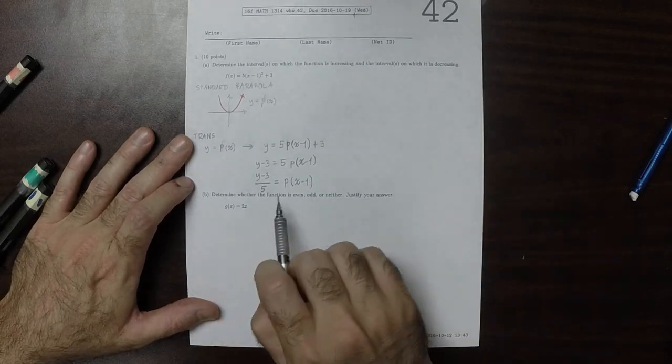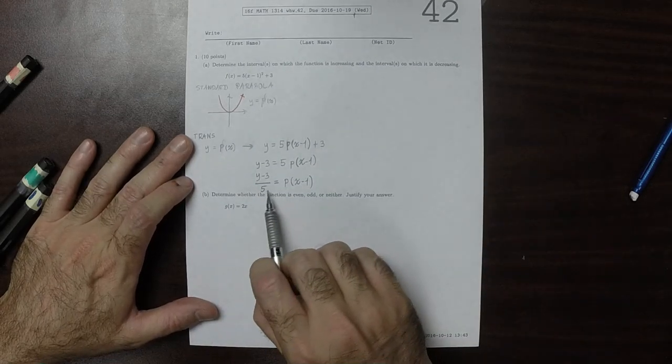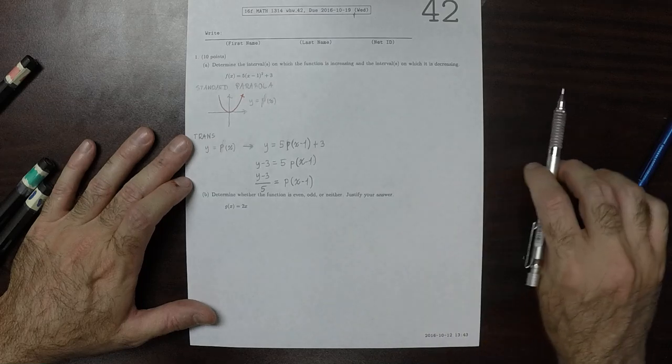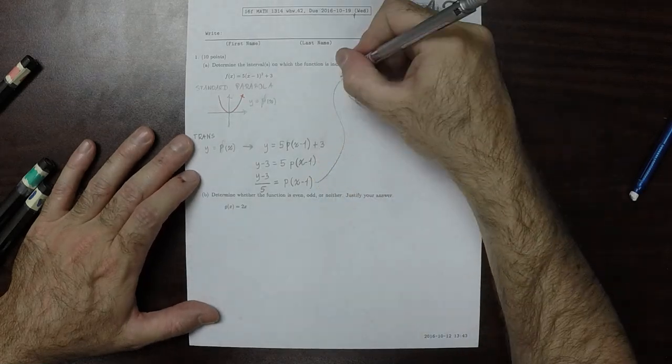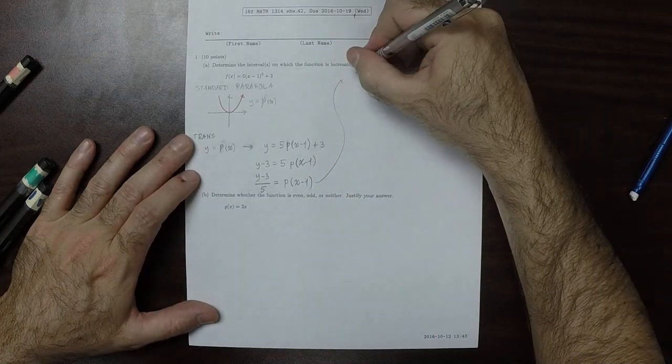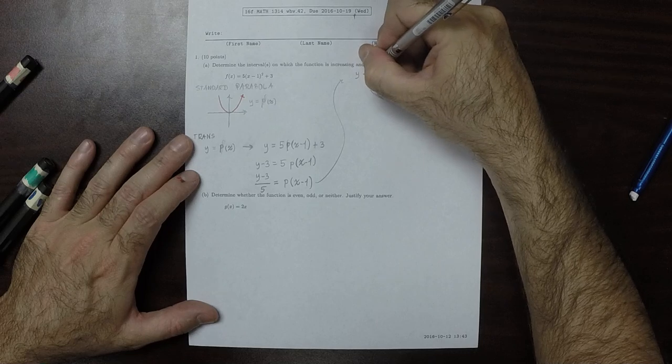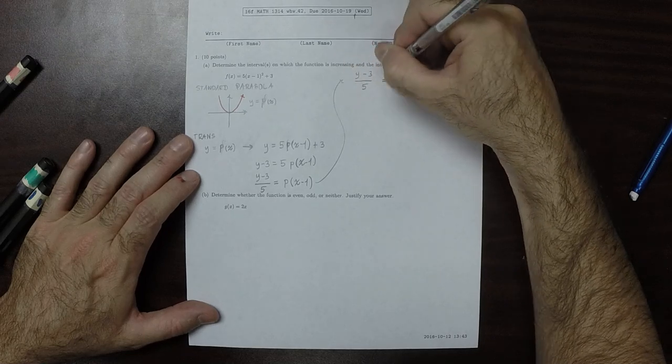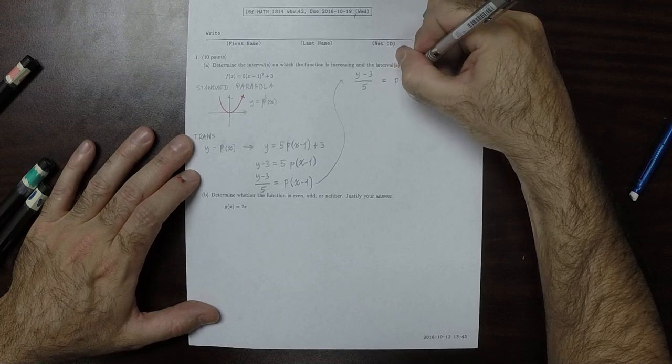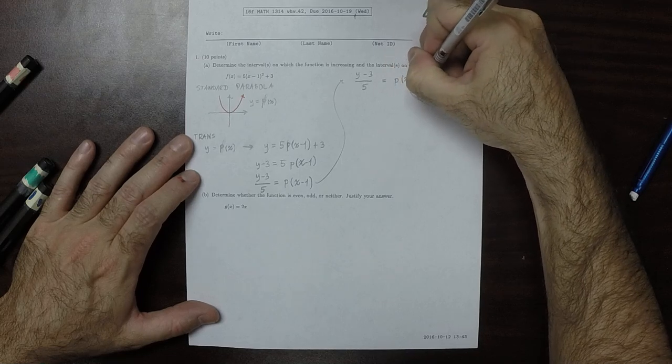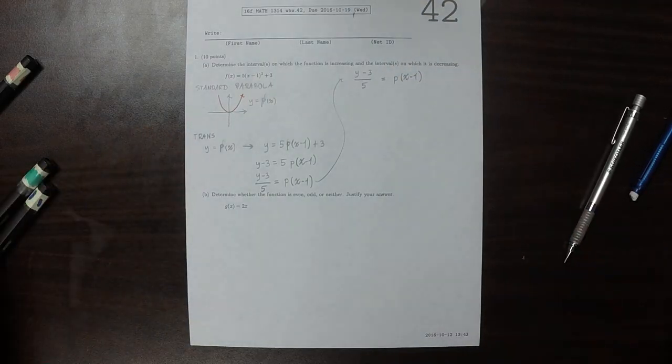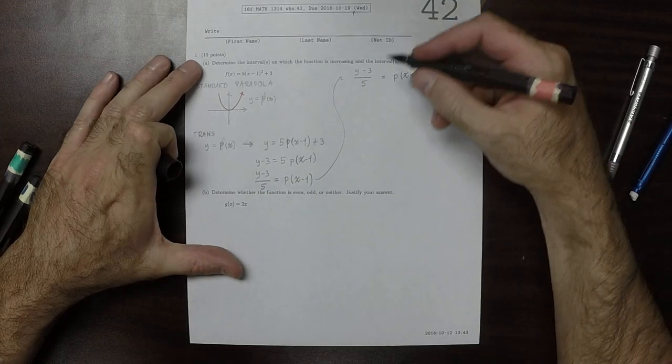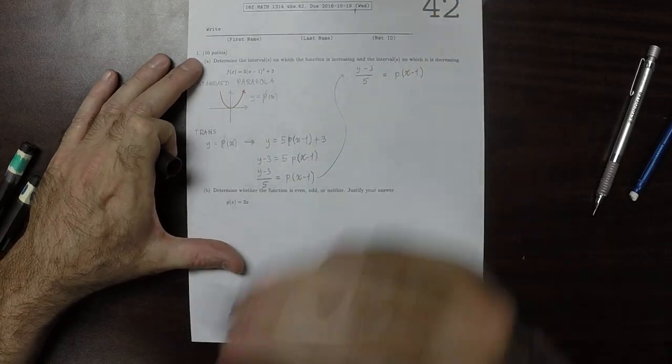So now let's analyze what each of these pieces is doing, each of these transformations. So I'll copy this up here. So y minus 3 over 5 is p of x minus 1. So that means that if we were to plot, if we were to observe what this does to the plot, several things occur.